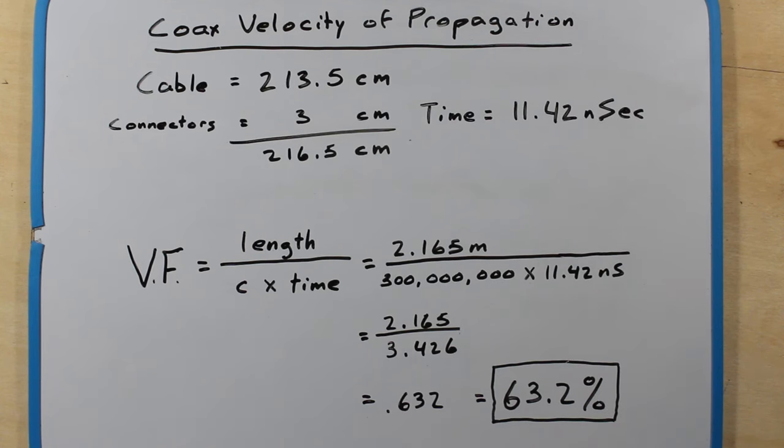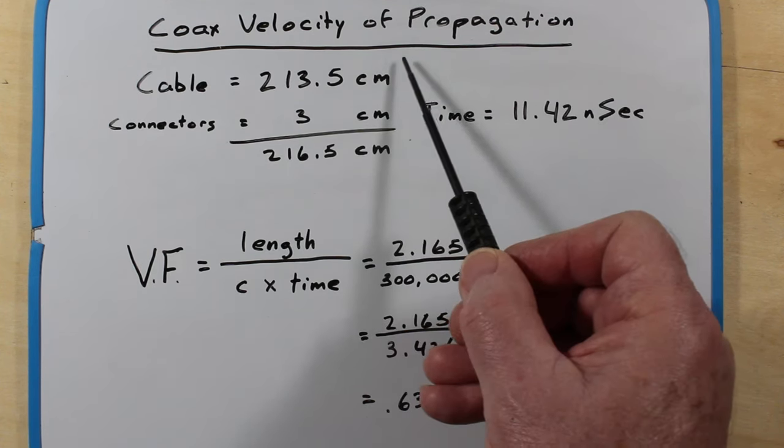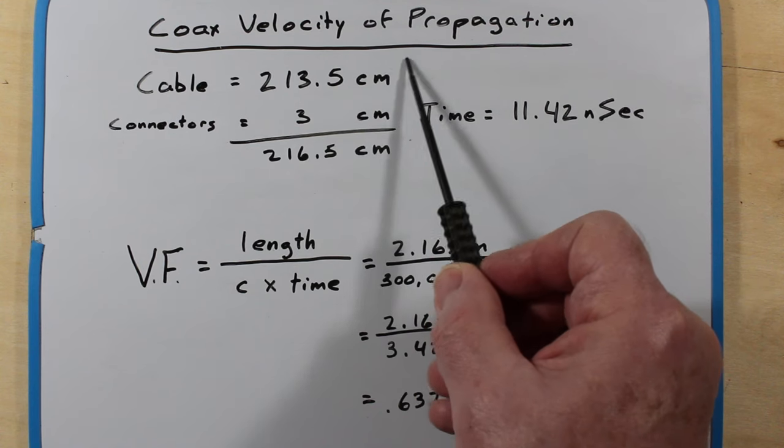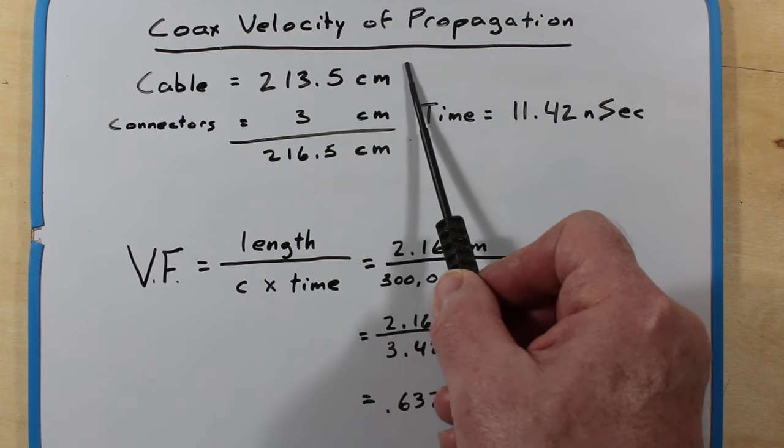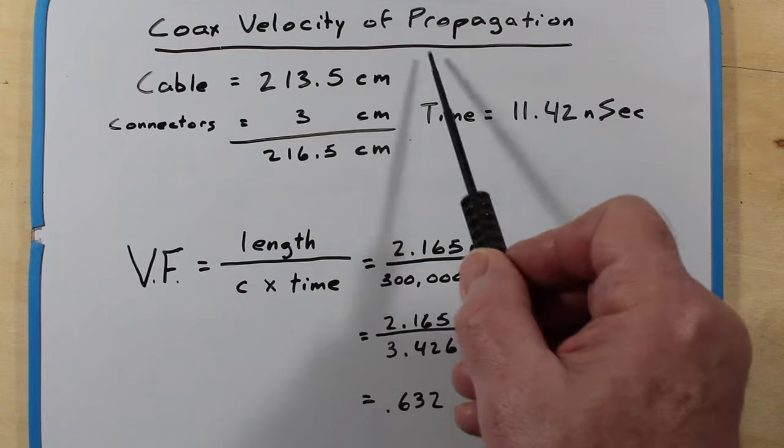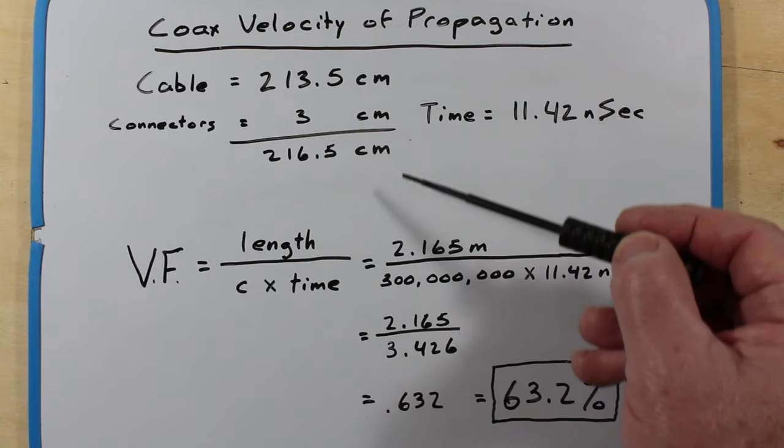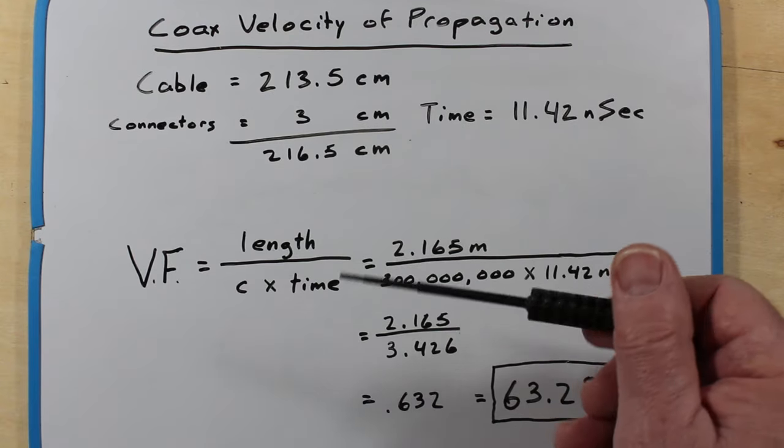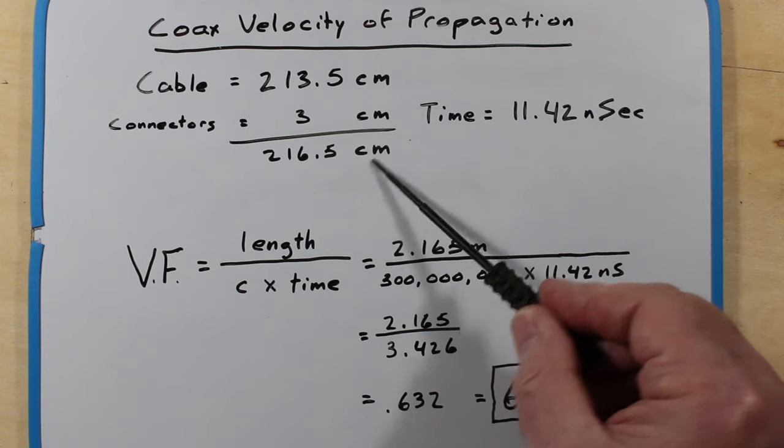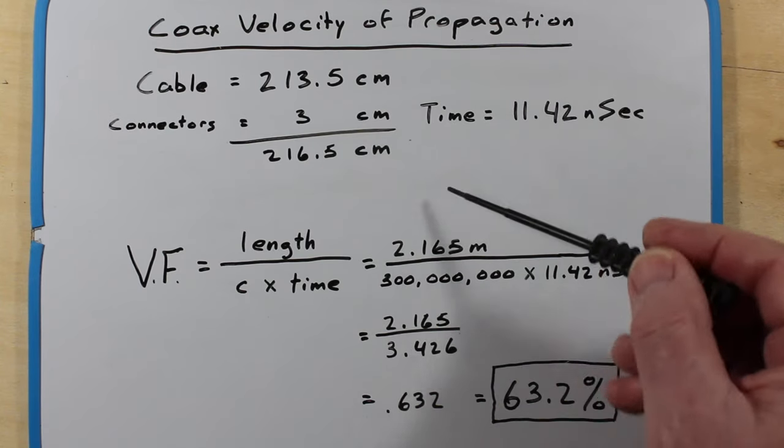So why would we want to know the velocity of propagation? If we're going to make some tuning stubs, as an example, we're going to use them in a phasing on an antenna, say, to phase the elements on an antenna. Or we want to make, say, a notch filter, that sort of thing, using a T.